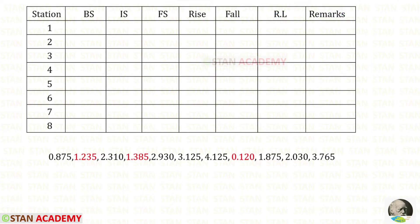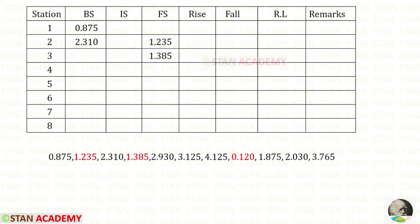We know that the first reading should be the back sight and the second is the foresight. In between these two readings there is no other reading, so there will be no intermediate sight. The first reading goes in the back sight column and the next reading in the foresight column. After the foresight, the next reading should be the new back sight, placed at the same station as the foresight — that is station number 2. In between there is no intermediate sight.